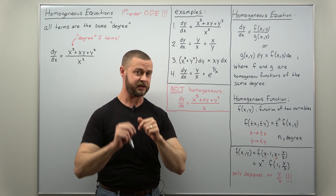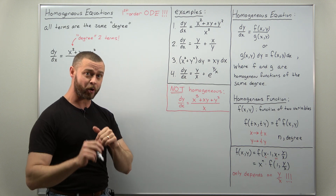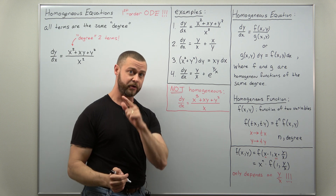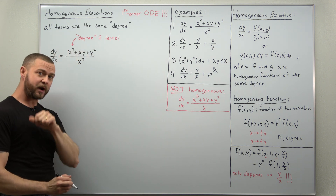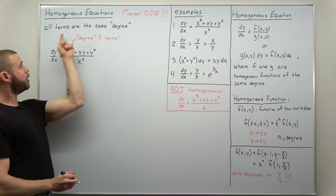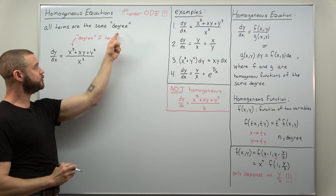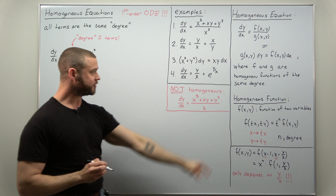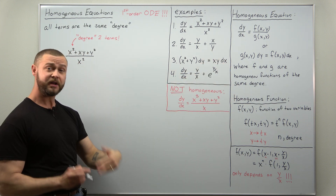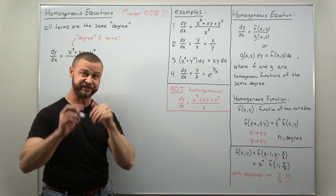What does homogeneous mean? Something should be the same. So let's point out the informal definition, or basically what your intuition might tell you. For a homogeneous equation, or first-order homogeneous differential equation, all the terms are going to be of the same degree. We're not going to define that formally here — that's left to the technical definitions. Let's take a look at a few examples to make sense of this intuitive idea of all terms being of the same degree.